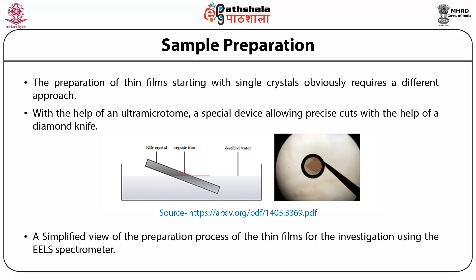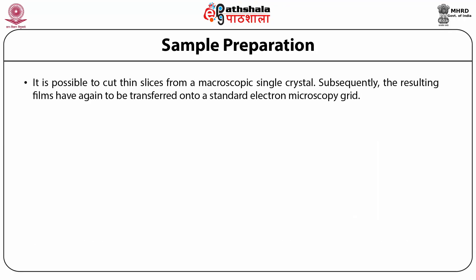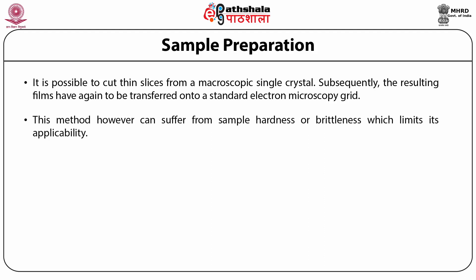The diagram shows KBr crystals, then a film on the surface which is organic in nature, and the distilled water which is present has also been shown. It is this organic film that is going to be analyzed with the help of this spectrometer. It is possible to cut thin slices from a microscopic single crystal; subsequently the resulting films have to be transferred onto a standard electron microscopic grid. This method, however, can suffer from sample hardness or brittleness which limits its applicability.